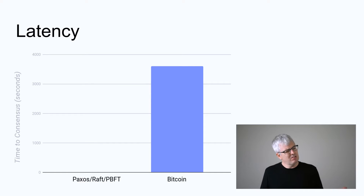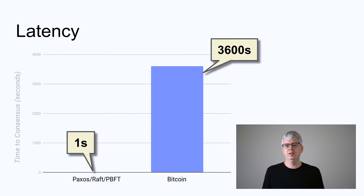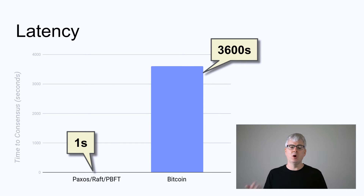Now let's talk about latency — how long does it take between when your application writes some data into your consensus system, and your consensus system comes back and says it's recorded, in consensus across all the computers, and durable, never going to go away? Once again, it doesn't look so good for Bitcoin. Paxos can do this in one round of the Paxos algorithm, under a second. Bitcoin, on the other hand, you have to wait for the next block to be mined, and a block is mined every 10 minutes.